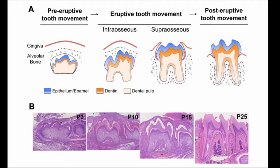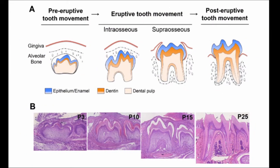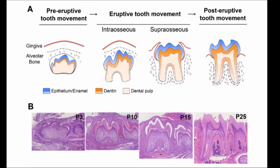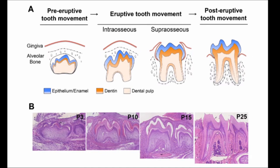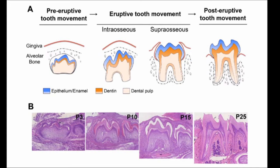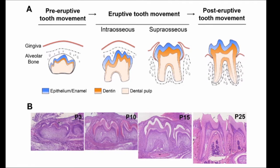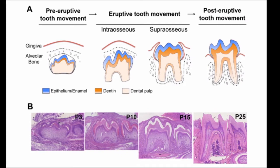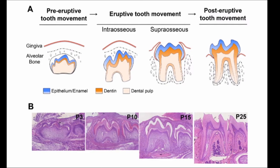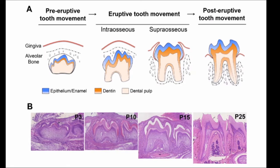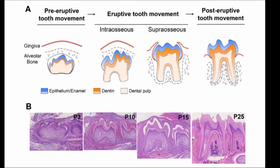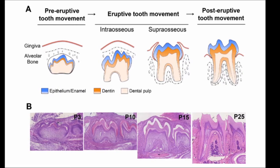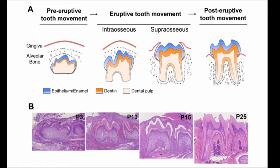The next phase is the post-eruptive tooth movement phase, which is responsible for maintaining the functional position of occlusion of the erupted tooth. After a tooth has erupted, the jaw growth is still continuing. For example, the permanent incisors erupt at age 7 or 8, but the jaws continue to grow till the age of 13 to 15. So the post-eruptive tooth movement accommodates the growth of the jaws.